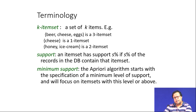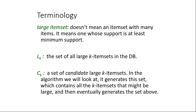At 0.01 percent — that is 1 divided by 10,000, or 10 to the power 4 — for 20 million records, 0.01 percent comes to be 2,000. So an item set should occur at least 2,000 times before we go ahead and create the rule; otherwise we will not create the rule. A 'large item set' does not mean one with many items — it means one whose support is at least higher than the minimum support.